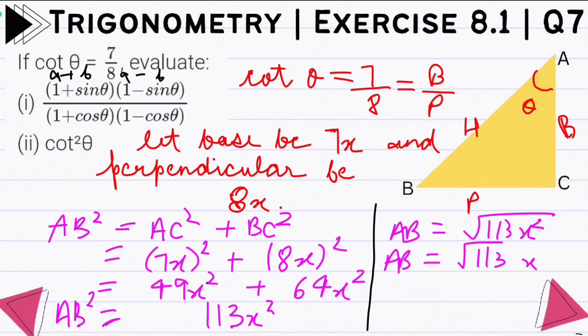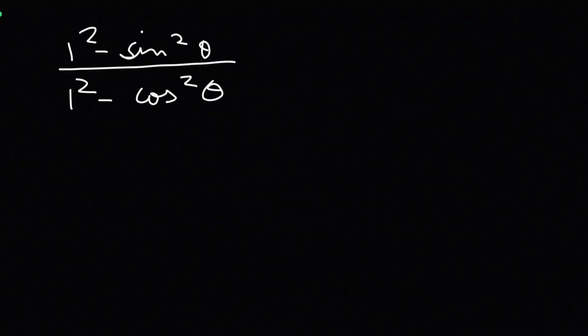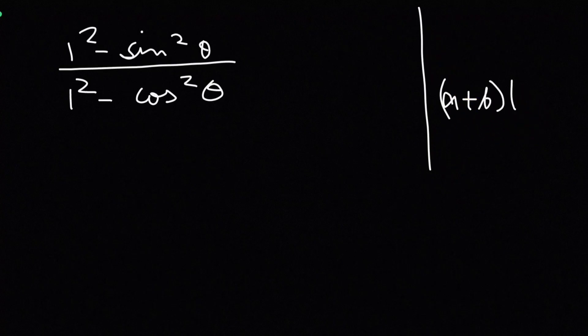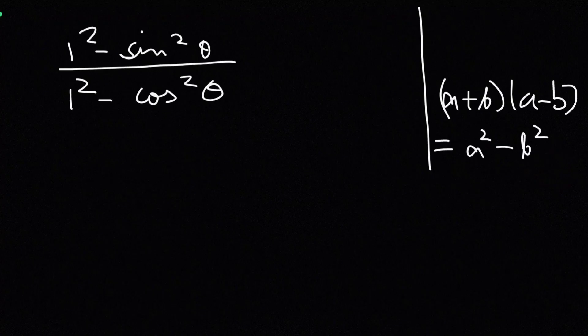And upon mein, denominator mein (1+cosθ)(1−cosθ) hai, jo 1² minus cos²θ ho jayega. So yeh simple na — algebraic identity (A+B)(A−B) = A²−B² apply ki, which I have done in class.